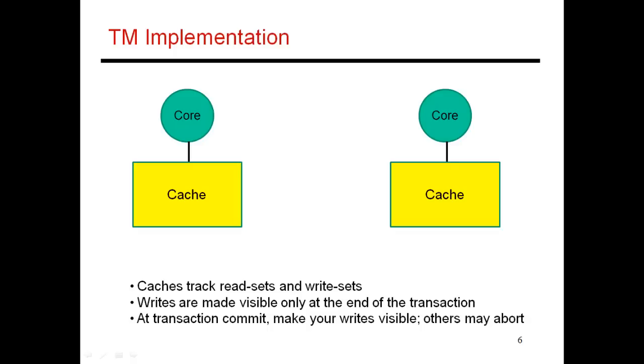And the first transaction to reach the end is going to get to commit. So we are guaranteed of making forward progress because somebody is going to get to the end of the transaction first.